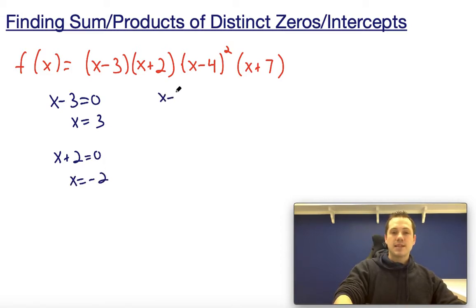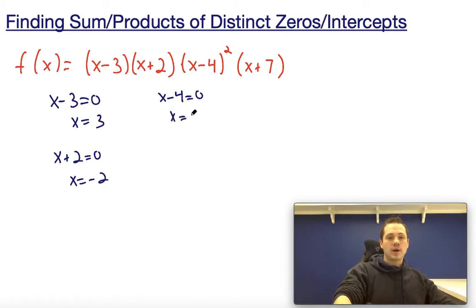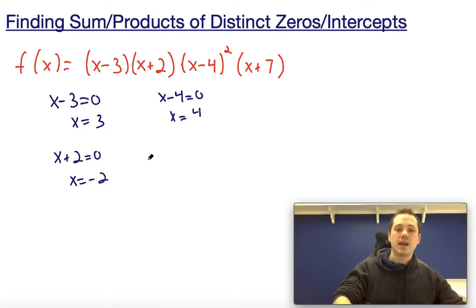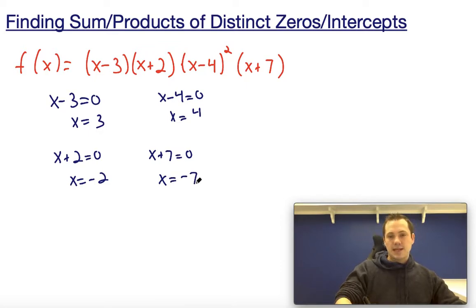Setting x minus 4 equal to zero, I would find x equals 4. Now notice I only have to do this once. There's no need for me to set it equal to zero twice because it's squared, because I'm only looking for the distinct zeros. So 4 is a distinct zero even though it's a double zero. And then setting x plus 7 equal to zero, I get x equals negative 7.